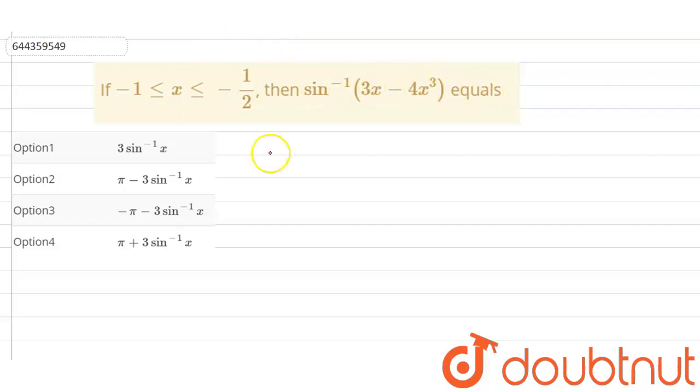So we already know that in the NCERT it is given that 3 sine inverse x is equal to a set of values in which it lies, that is sine inverse 3x minus 4x cube, which is if x is between minus 1 by 2 to 1 by 2.